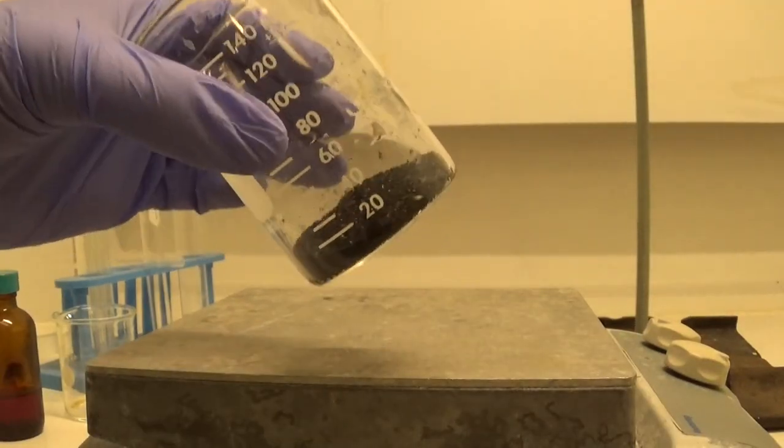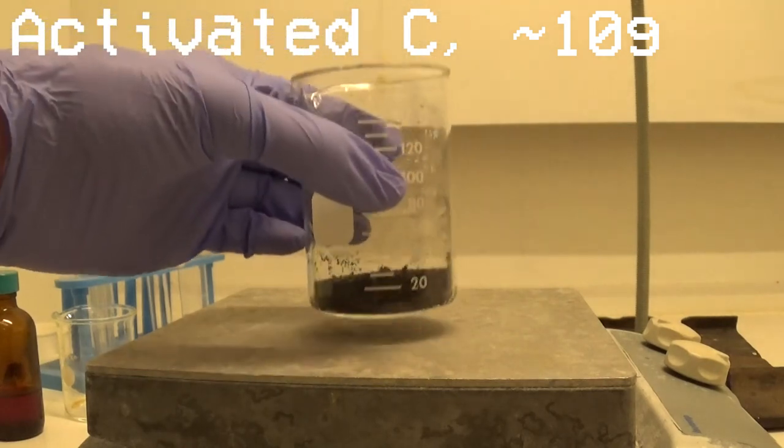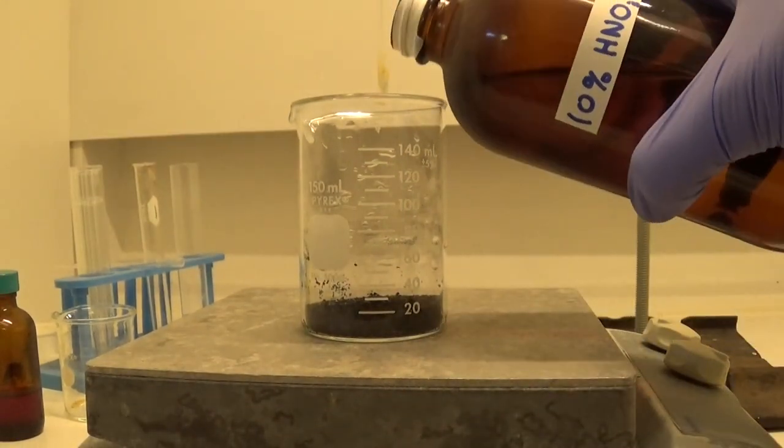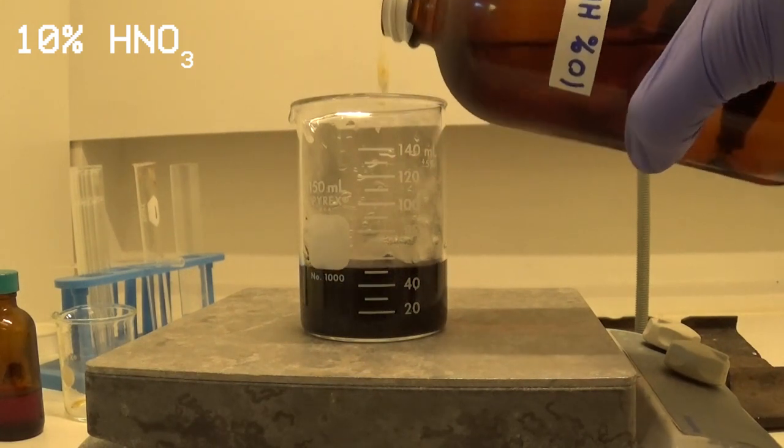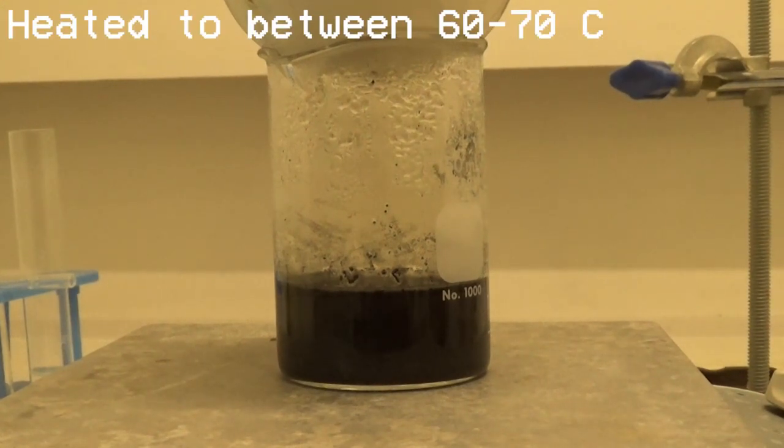My carbon source is some activated carbon, and I measured out about 10 grams, maybe a little bit more. I put the activated carbon in a beaker and covered it with some 10% nitric acid. I then put this on my hot plate and let it heat up to around 60 or 70 celsius, and let it sit there for a few hours.